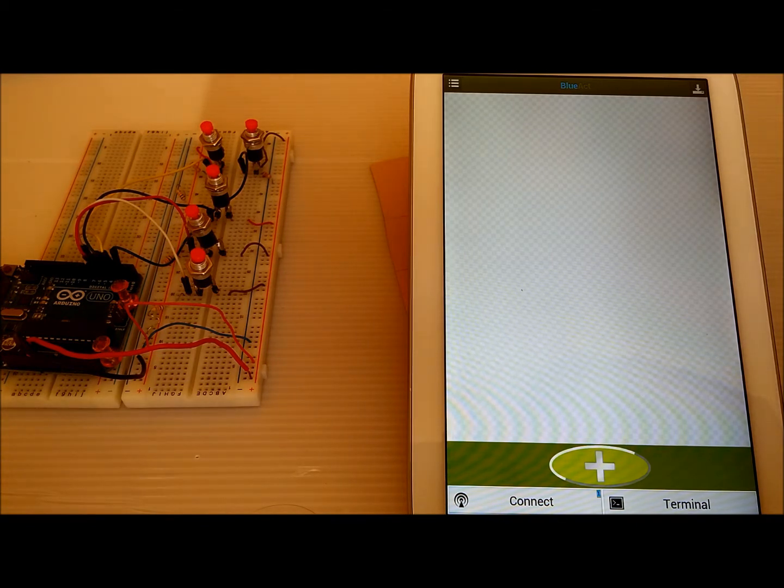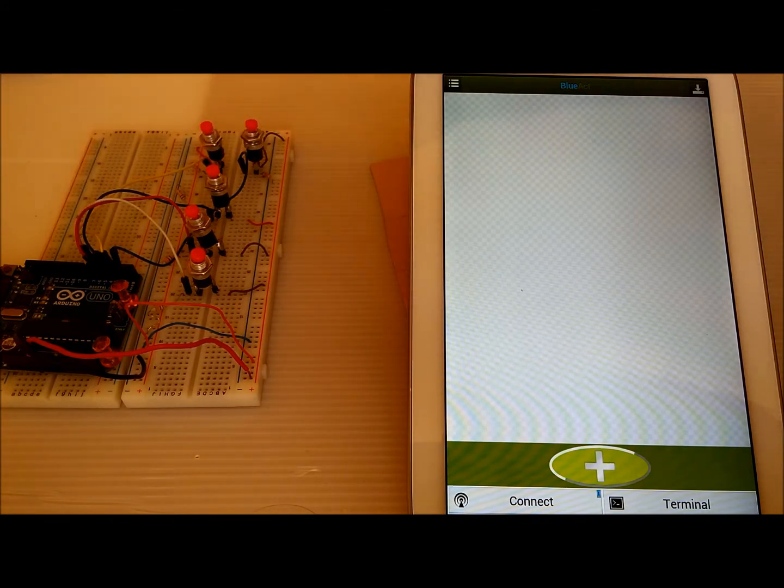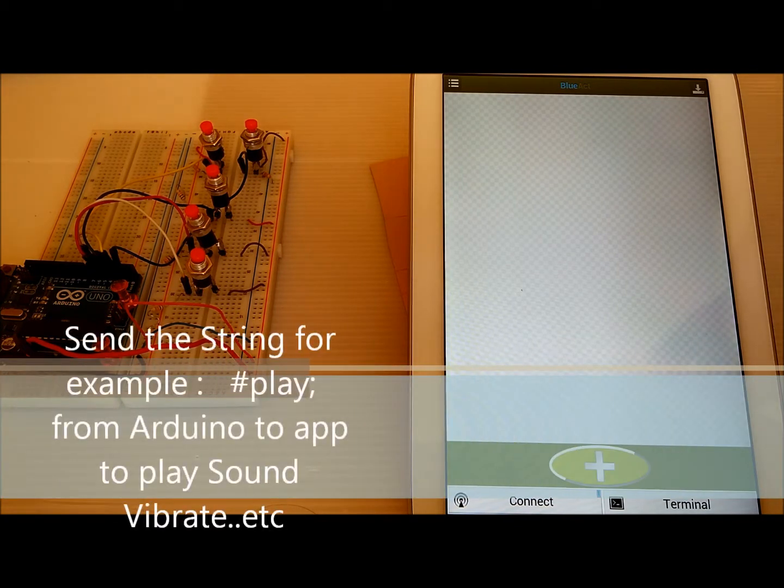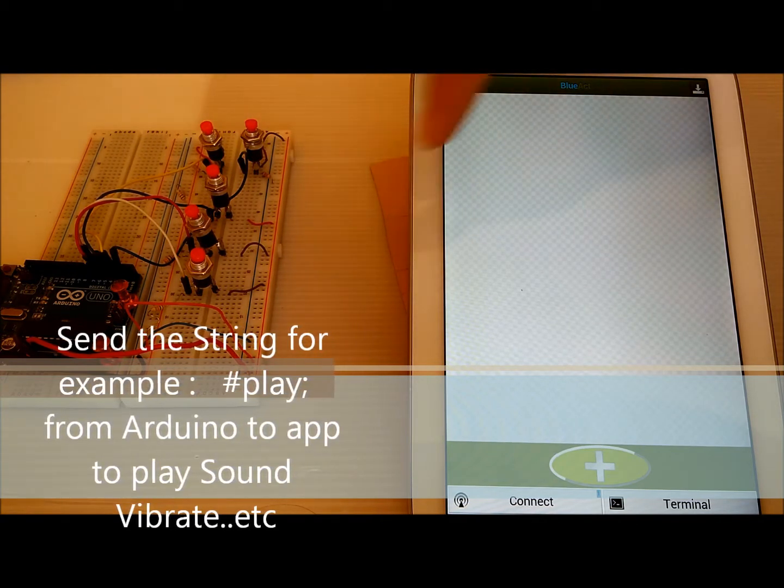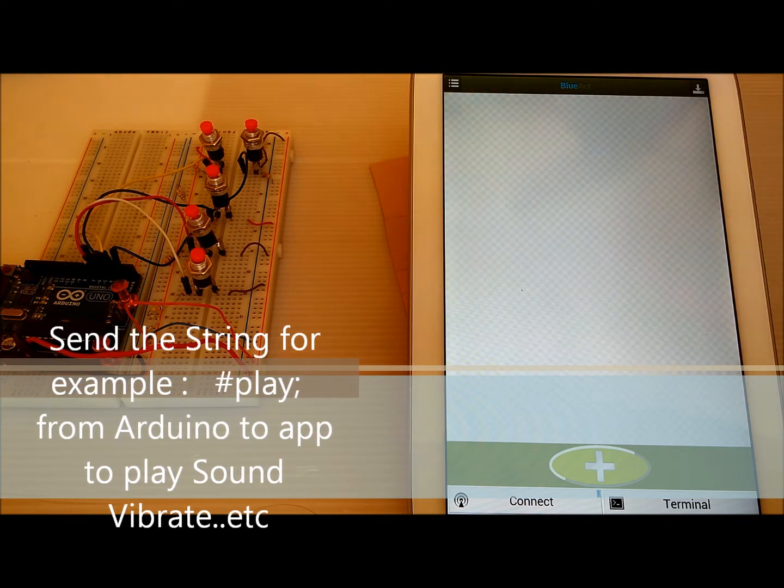So now we will add some actions. For each data sent from Arduino, from here to this app, there will be an action to handle this data. So for example, if we send play from here, the string play, there will be an action to handle this string, like playing sound or vibration or anything.